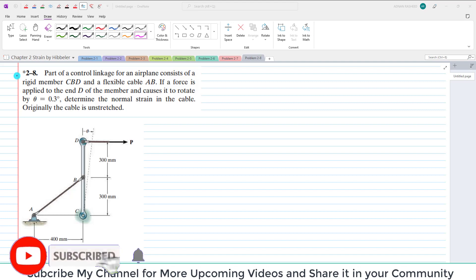Hello and welcome back. Problem 2-8. Part of a control linkage of an airplane consists of a rigid member CBD and a flexible cable AB. This is CBD, which is a rigid member that is supported by a flexible cable AB. If force P is applied at the end D of the member, it causes it to rotate by theta equals 0.3 degrees.